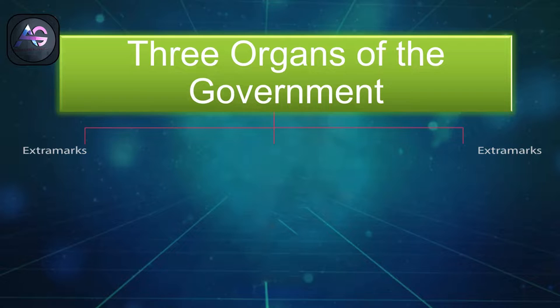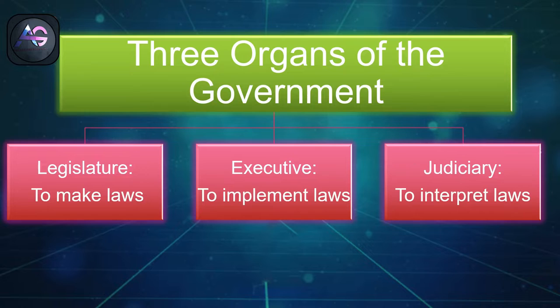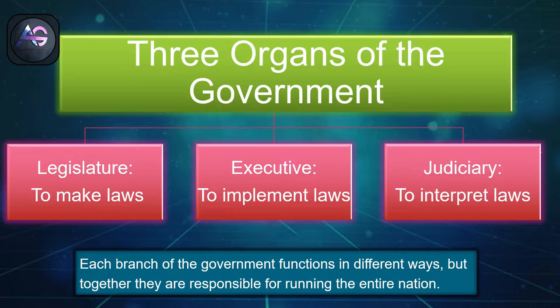The Constitution of India prescribes three branches of the central government: the legislature to make the laws, the executive to implement the laws, and the judiciary to interpret the laws. Each branch of the government functions in different ways, but together they are responsible for running the entire nation.